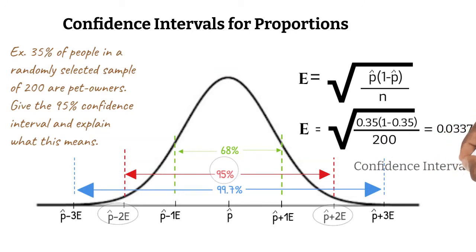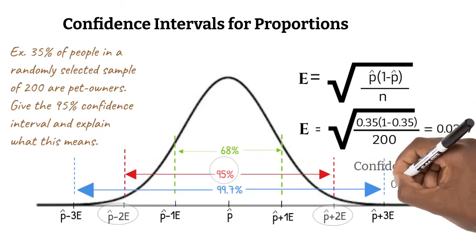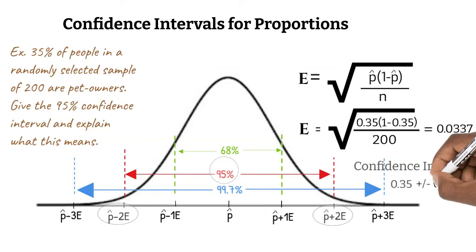Our 95% confidence interval is our proportion, 0.35 plus or minus 2 standard errors, 0.0674.